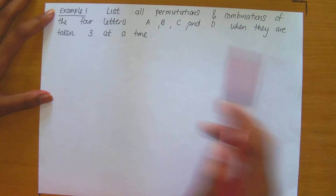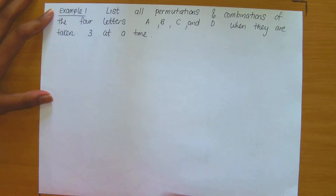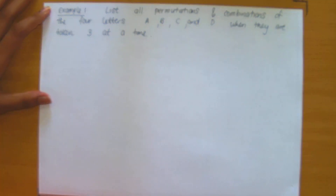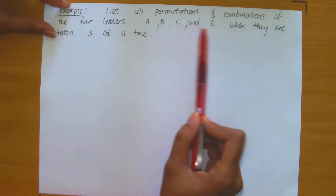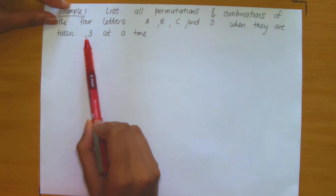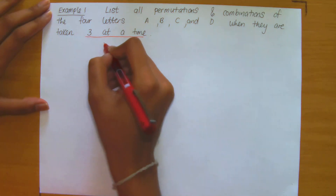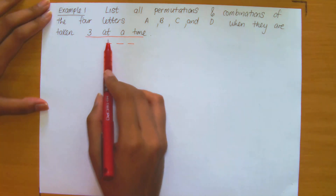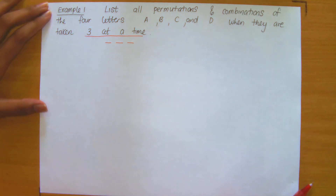In this video lecture, I'm going to be answering a question on permutations and combinations that illustrates their differences. This question says that we need to list all of the permutations and combinations of the four letters A, B, C, and D when they are taken three at a time. Three at a time means we are allowed to make three-letter word arrangements, which is what we will be creating when we list the permutations and combinations.